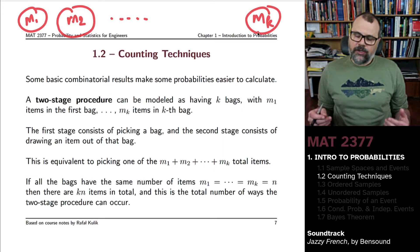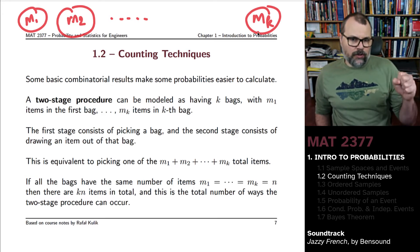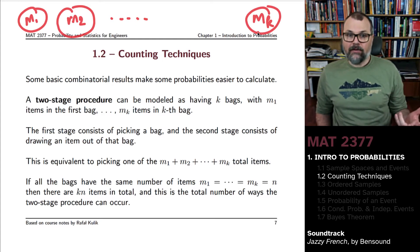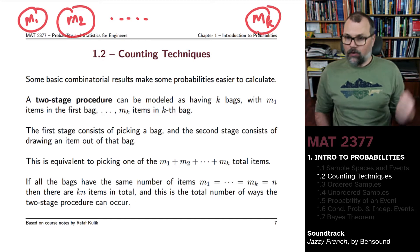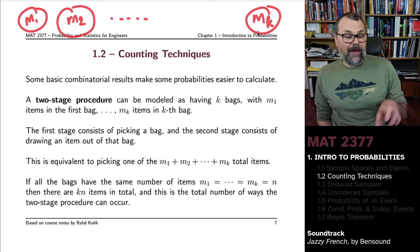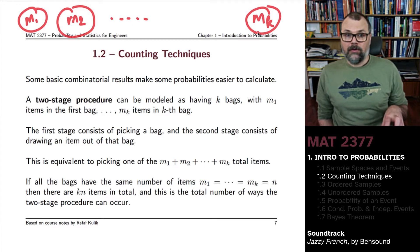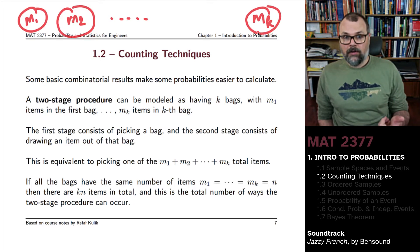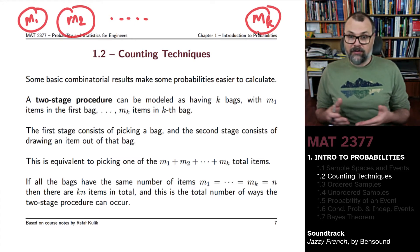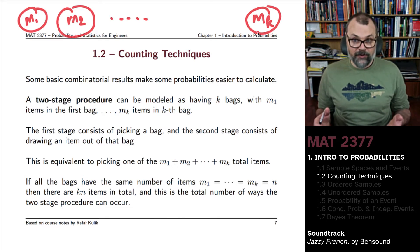So when you have a two-stage procedure, what you're doing is you first select a bag. Now it turns out there's K different ways of doing that. You can pick the first bag, or the second bag, or the third bag, all the way up to the K-th bag. And the second stage will be once you've selected a bag, you pick one of the items inside of it. Now depending on the bag that you pick, you'll have a different list of potential items to pick from for your second stage.